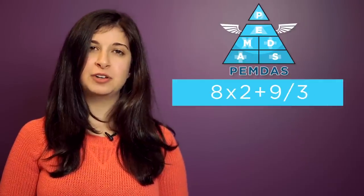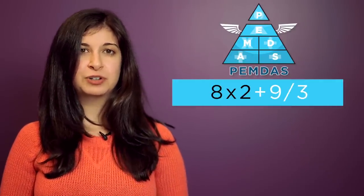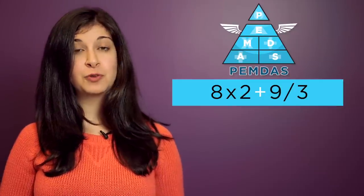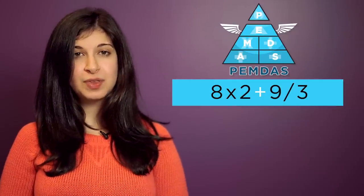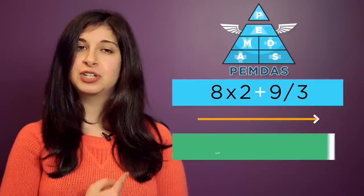Next is M and D for multiply and divide. Anywhere in your expression that has a multiply or divide sign needs to be done before addition or subtraction. If there is multiply and divide in the same expression, then just go left to right.